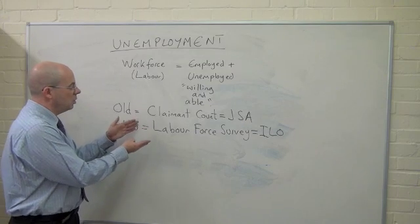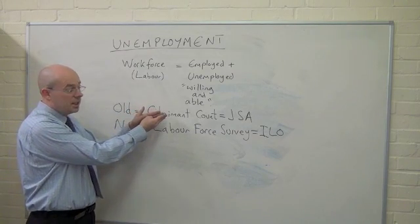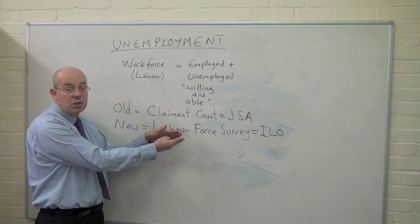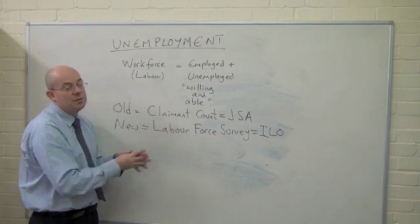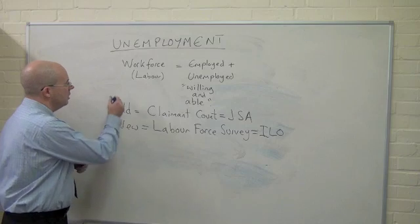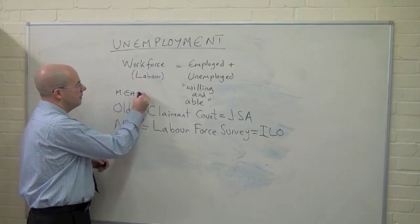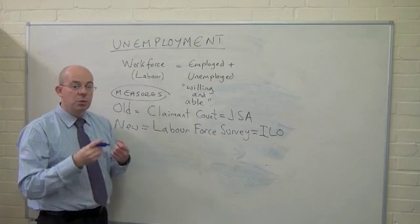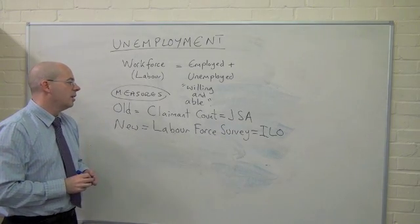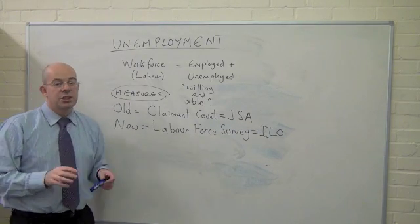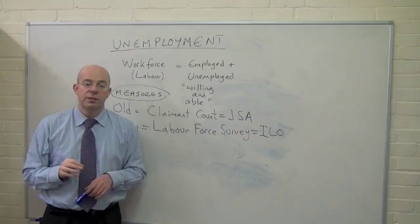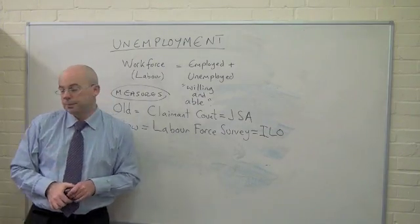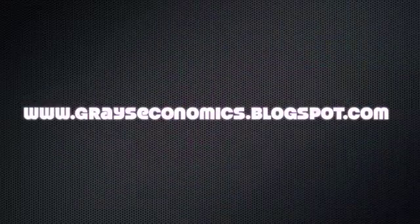So it is a wider measure. The measures could differ significantly — say, one million on the Jobseeker's Allowance claimant count versus two million on the International Labour Organisation measure. They are very different measures. So here we've looked initially at the measures of unemployment, which is one of the things you need to understand. Next we'll deal with the question of types of unemployment.